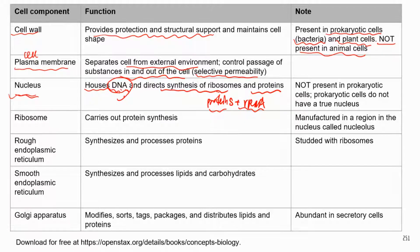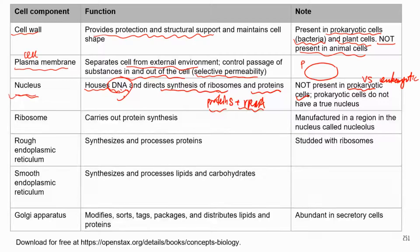A key difference between prokaryotic cells and eukaryotic cells is that prokaryotic cells do not have a true nucleus — there's no nucleus present in prokaryotic cells. There's no nucleus that can enclose the genetic material, which is DNA. In prokaryotic cells, the DNA, which is in the circular chromosome, is just free-floating in the cytoplasm; it's not enclosed by anything.